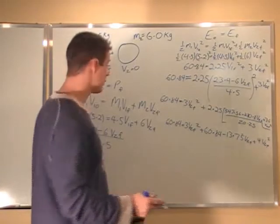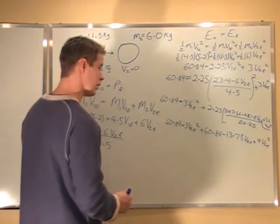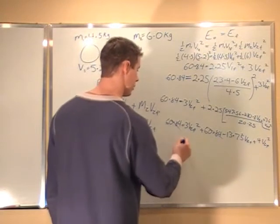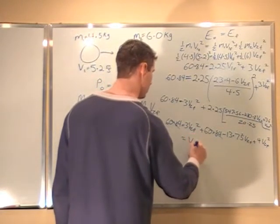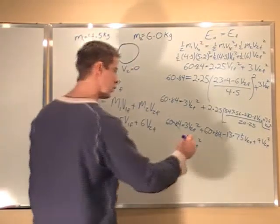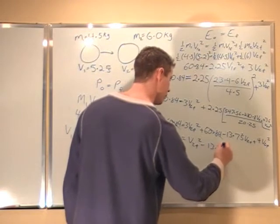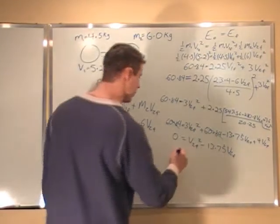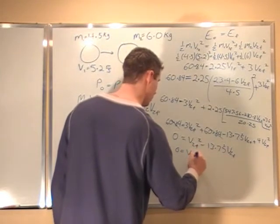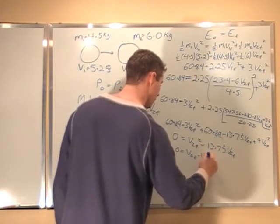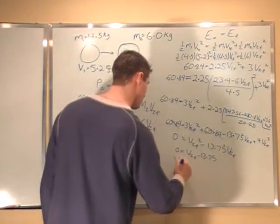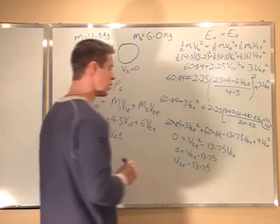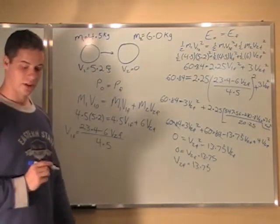Now all I have to do is combine my like terms. So I have 3 V2 F's cancel with these V2 F's. That's 60 minus 60. That gives me 0. So this one cancels right out. I'm left with these 3 cancel with 3 of those. So I get V2 F squared minus 13.75 V2 F is equal to 0. If I divide out of V2 F, I'm going to get 0 equals V2 F plus 13.75. So we can see here that V2 F equals 13.75. So we've got one of our answers already. Now we just need to figure out the second one.